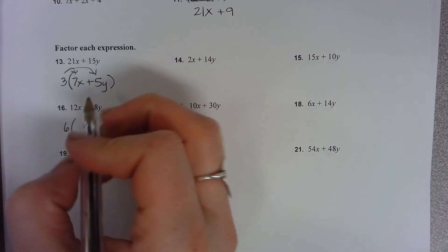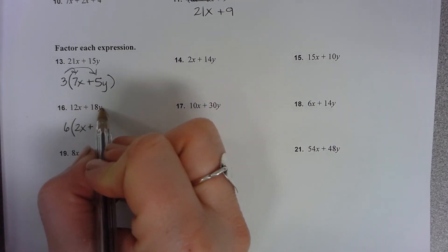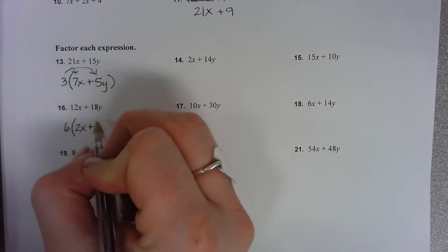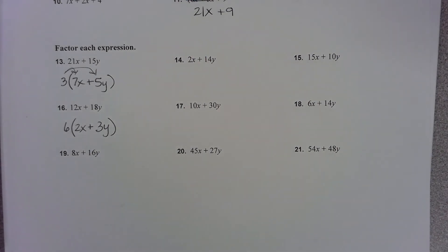So 12x divided by 6 is 2x. Bring down my symbol. 18y divided by 6. 18 divided by 6 is 3. Attach my y. And I simplified or factored that expression.